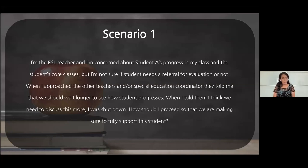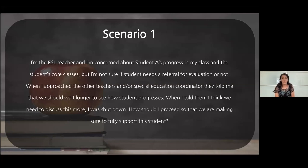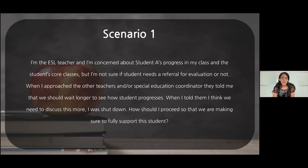Scenario 1: I'm the ESL teacher concerned about student A's progress in my class and their core classes, but I'm not sure if the student needs a referral. When I approached the other teachers and the special education coordinator, they told me to wait longer. When I said we need to discuss this more, I was shut down. How do I proceed to fully support this student? It's really hard and difficult anytime someone is shut down when trying to advocate for a student.